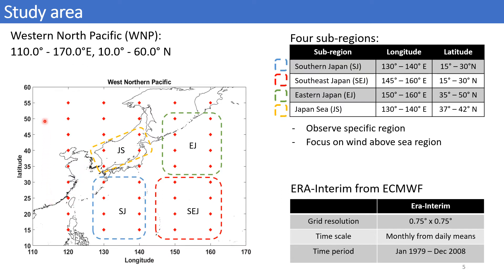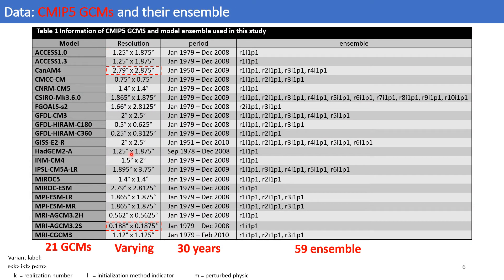This is the study area: the Western North Pacific. We also defined four sub-regions — JS, EJ, SJ, and SEJ — to investigate marine surface wind characteristics further. As the reference dataset, we used marine surface wind from ERA-Interim reanalysis at the given spatial resolution, collected for 30 years from January 1979 to December 2008, from which we calculated monthly values from daily data. A table shows 59 ensembles from 29 GCMs from CMIP-5, with varying spatial resolution, for 30 years.